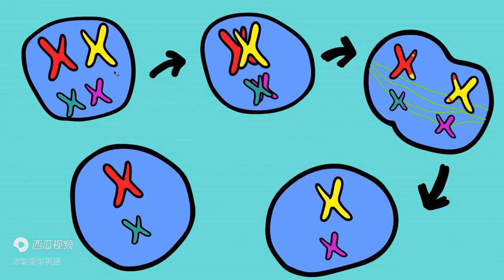But we just used two to just make it simple. So here's a cell. There are four chromosomes in it. Two small ones, two big ones.